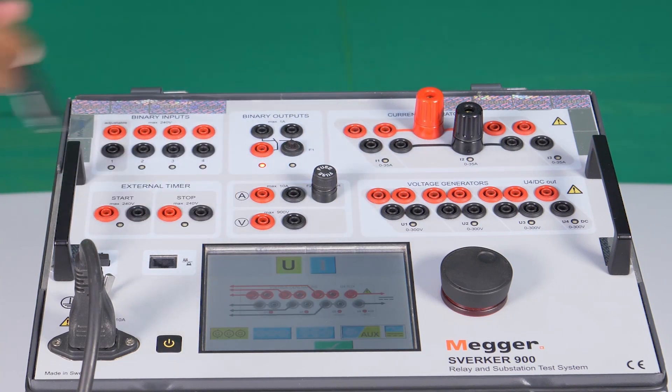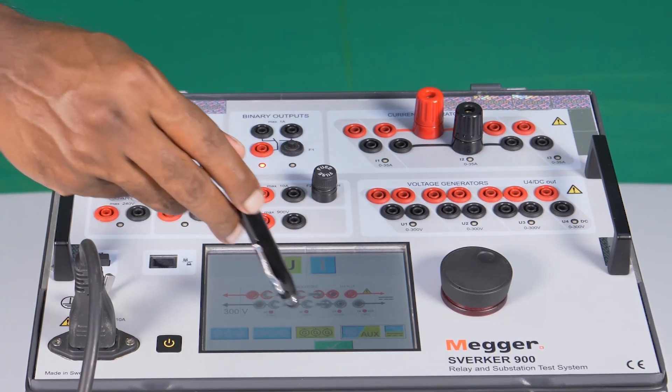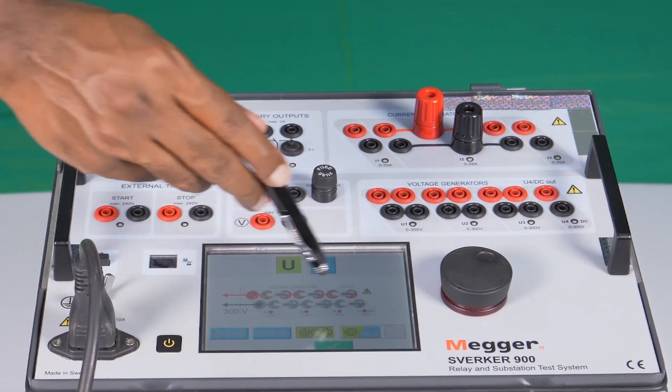By pressing this button, you can change the connection of the generators from series to parallel, and this is the fourth source that can be configured as auxiliary DC or the main supply.